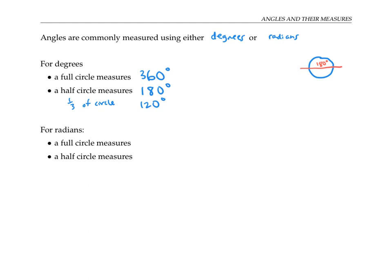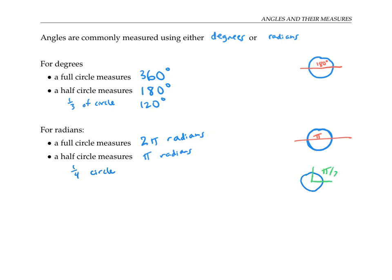If we're using radians instead, then going all the way around the circle is called two pi radians. The two pi was chosen because that's the circumference of a circle with a radius of one. A half circle is then half of two pi radians, which is pi radians. And a quarter of a circle would be a quarter of two pi radians — a quarter of two pi is pi over two.